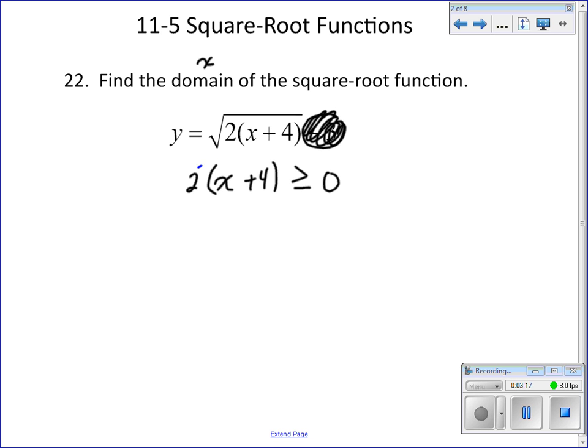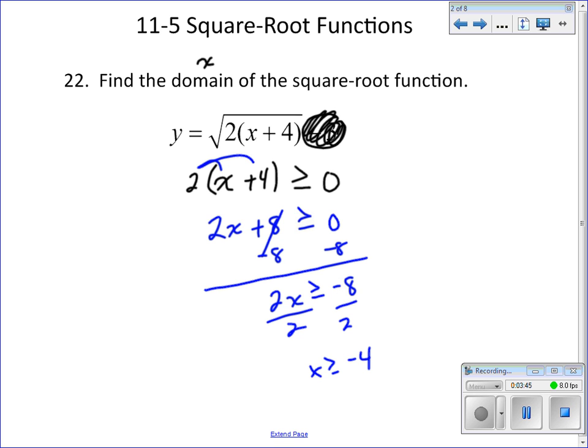So now to solve this, we're going to take 2 times x and then 2 times 4. We're going to distribute it, get 2x plus 8. And then we bring our greater than or equal to 0 straight down. Now we subtract 8 from both sides. These cancel. We're left with 2x greater than or equal to negative 8. Now we divide by 2. We're left with x is greater than or equal to negative 4.